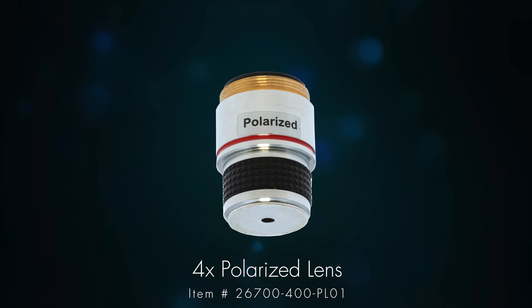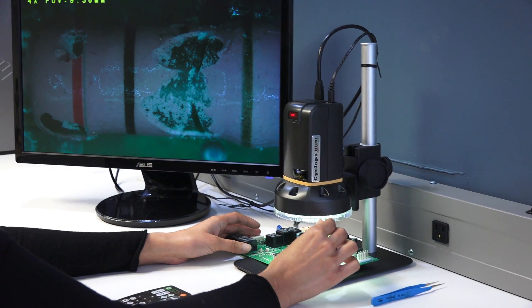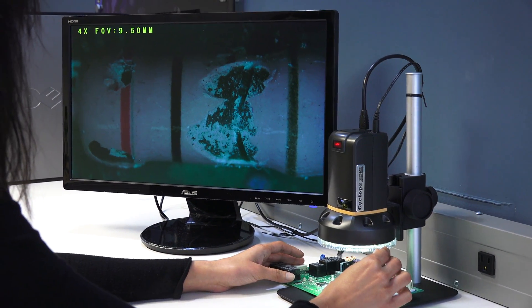For inspecting shiny or reflective parts, consider the 4x objective lens with polarizer to reduce problematic glare.